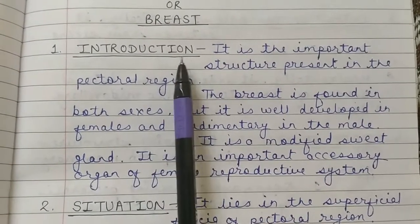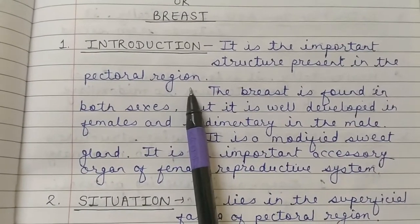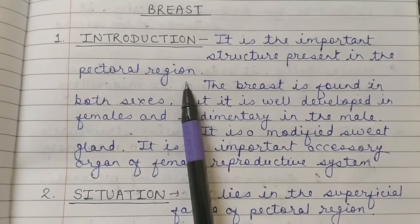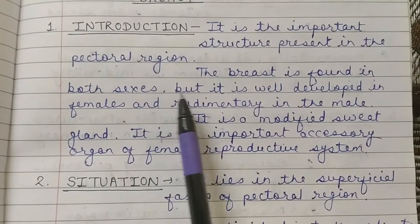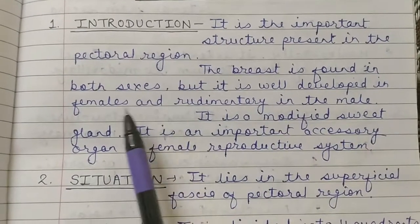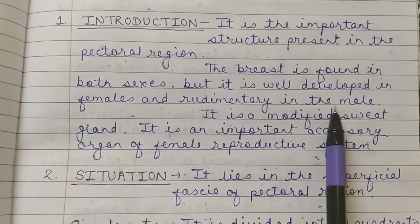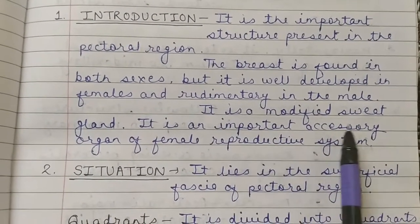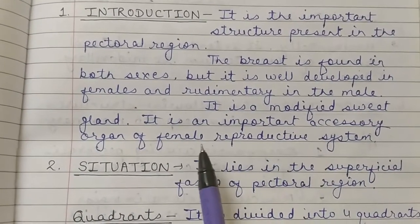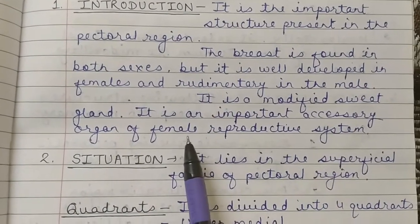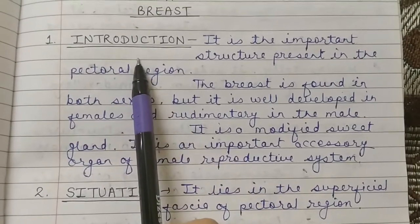The first point is the introduction of the mammary gland. It is an important structure present in the pectoral region. The breast is found in both sexes, but it is well developed in females and rudimentary in males. It is a modified sweat gland and an important accessory organ of the female reproductive system.